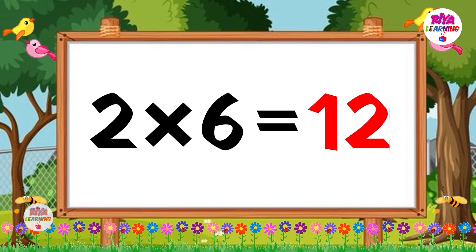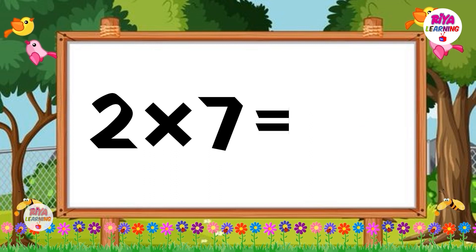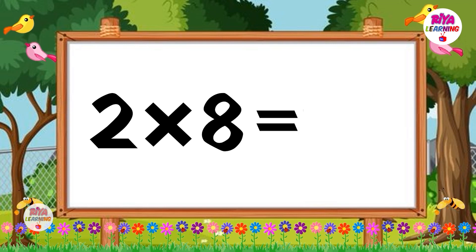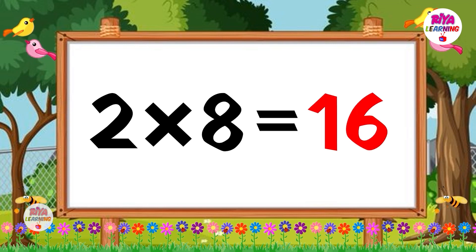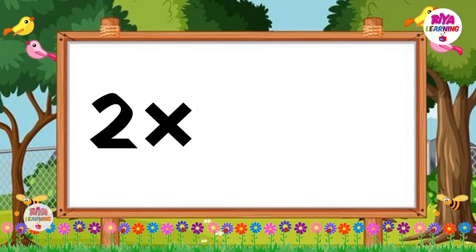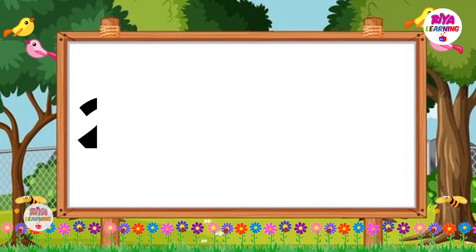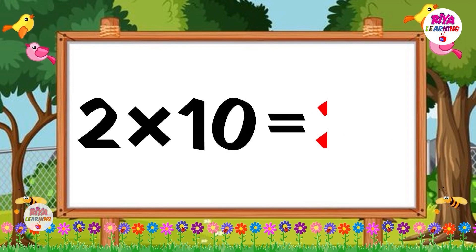Two sixes are twelve. Two sevens are fourteen. Two eights are sixteen. Two nines are eighteen. Two tens are twenty.